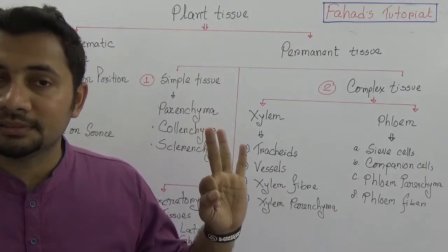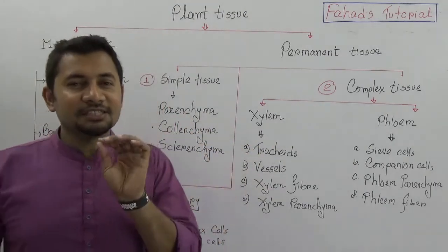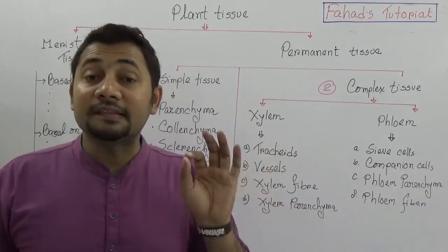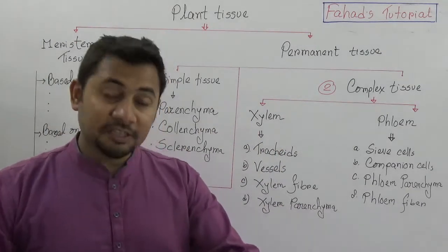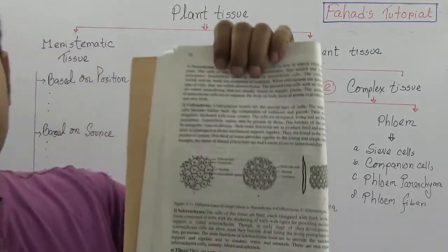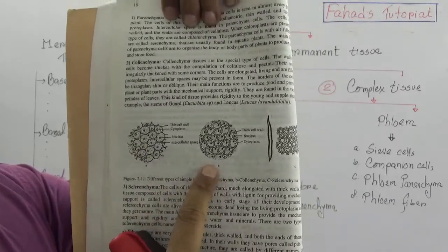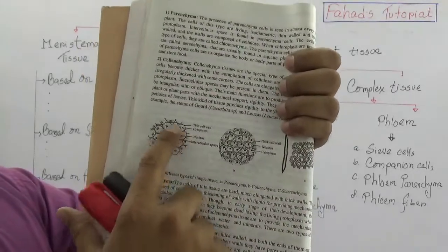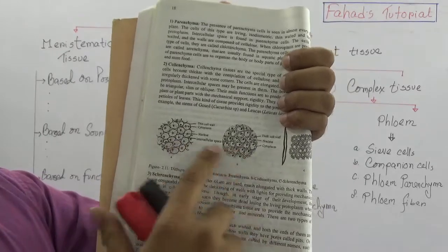Permanent tissues are three types: simple, complex, and excretory. The definition of simple tissues is that these tissue cells look alike in size and shape. If you see the pictures drawn in your papers or books, this is the parenchyma, this is the collenchyma, and this is the sclerenchyma. There are similarities in the size of the cells, which is why they are called simple tissues.